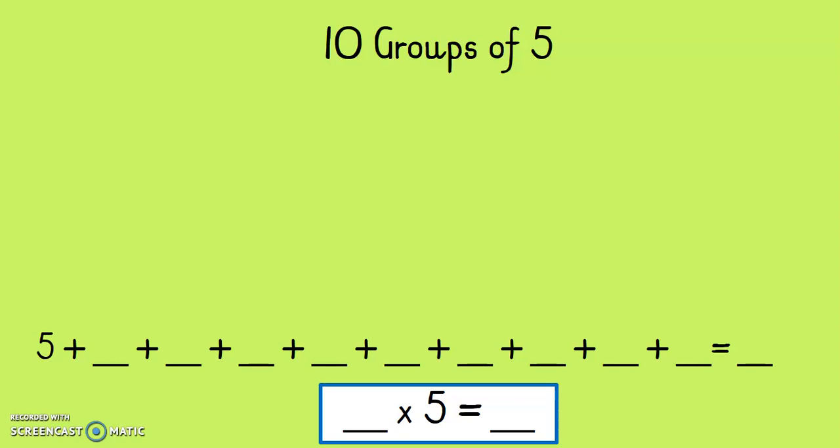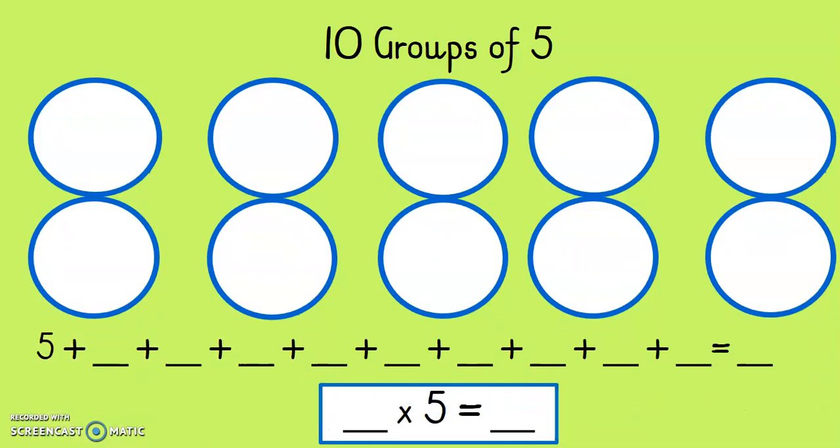Our next one — we have to do 10 groups of 5. So we need 10 groups: 1, 2, 3, 4, 5, 6, 7, 8, 9, 10. In each group you are going to put 5 stars. It's a lot of work but if you get it, it will be awesome. Write 5 plus 5 plus 5... do it 10 times, then count in 5s until you get the answer. Then do the times table — what times 5 equals the answer. Remember, 10 groups of 5. Pause the video and get started.